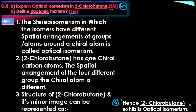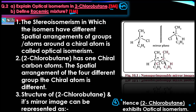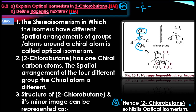2-chlorobutane has a chiral carbon atom with four different groups attached. A mirror image diagram is used here. The carbon atom has four different groups: methyl (CH₃), ethyl (C₂H₅), chlorine (Cl), and hydrogen (H). When you pass a mirror through, the hydrogen and chlorine swap positions, making the mirror image non-superimposable.